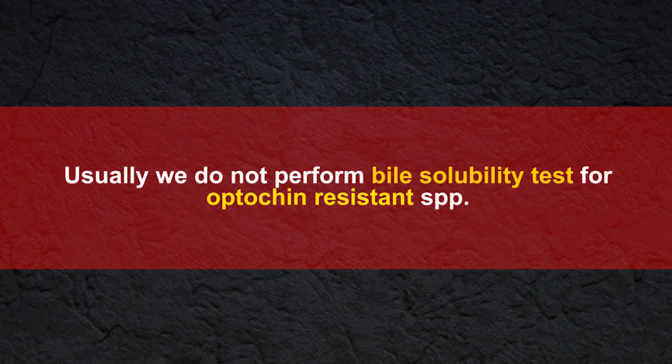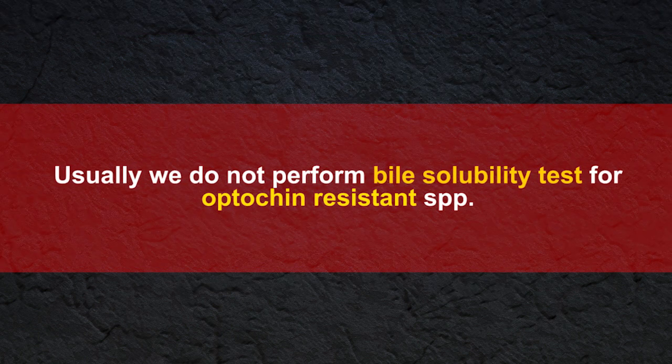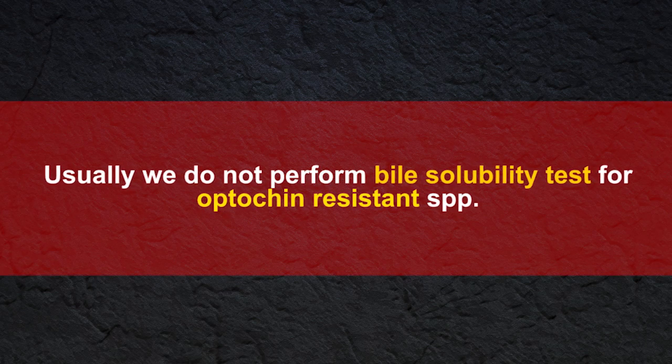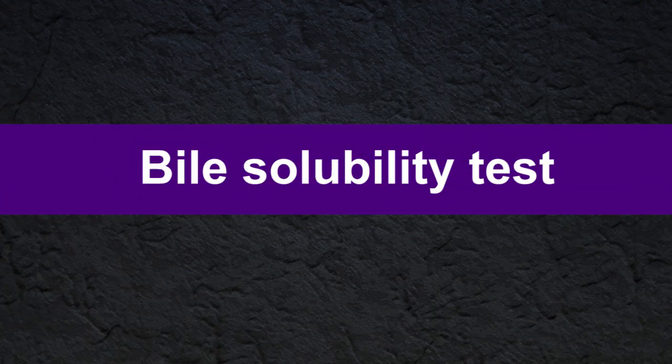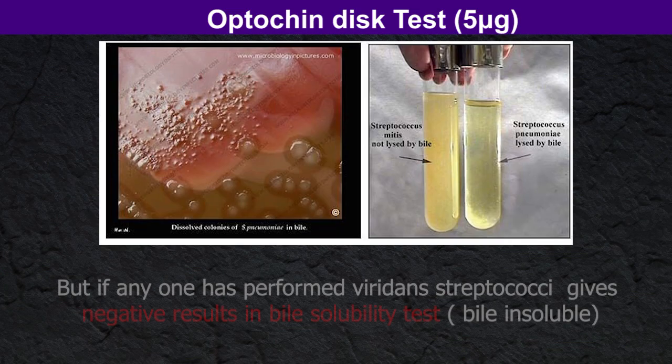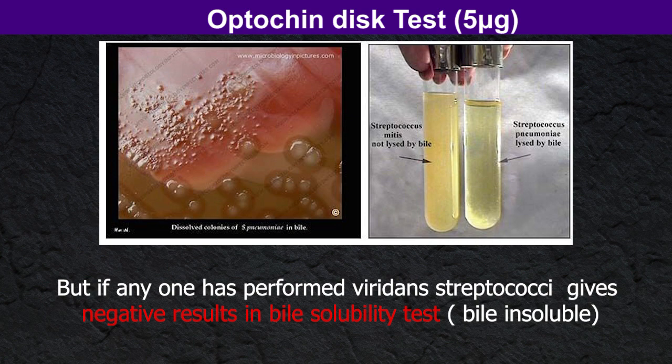Usually we do not perform the bile solubility test for optochin-resistant species, but if it has been performed, optochin-resistant streptococci give a negative result in the bile solubility test, meaning they are bile-insoluble. I hope you enjoyed this video and gained knowledge about how to identify and confirm viridans streptococci in your laboratory.